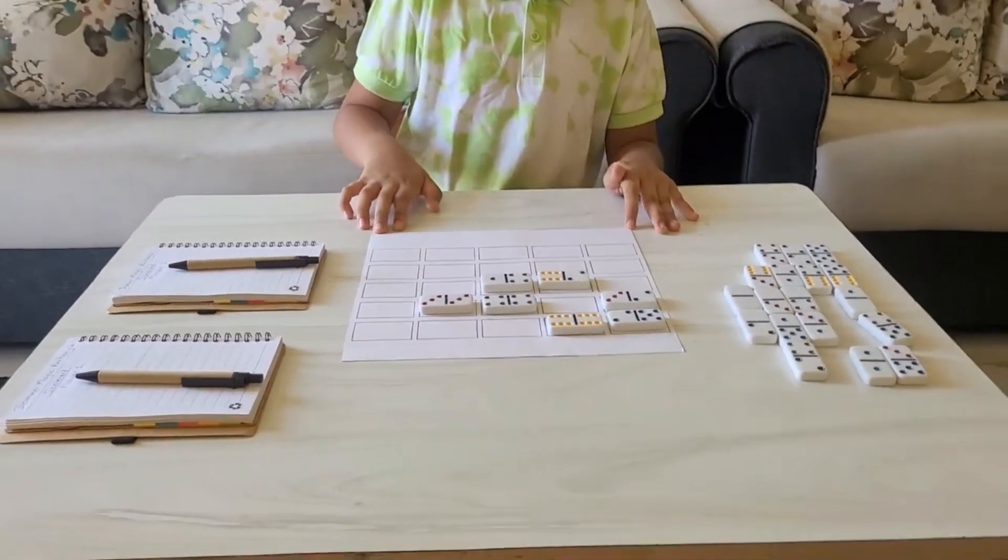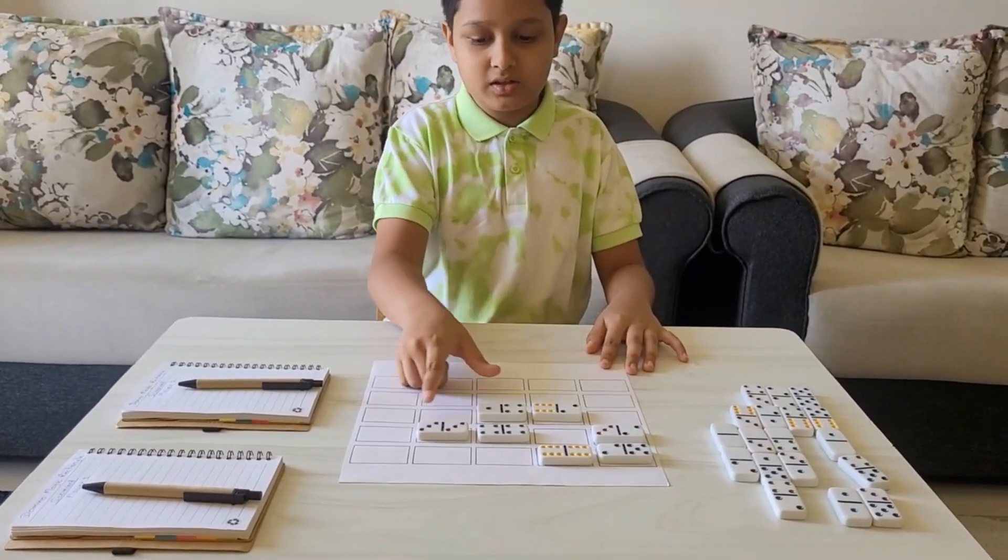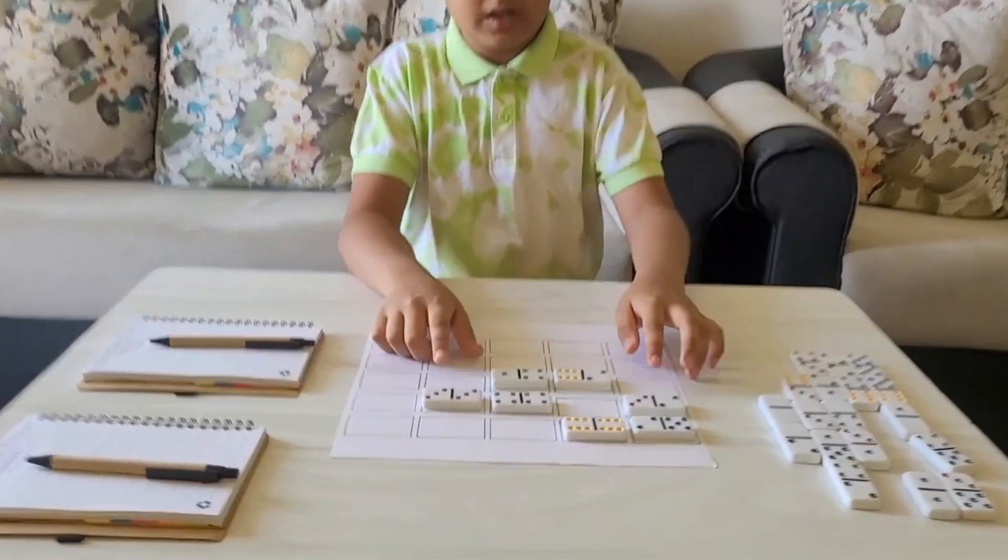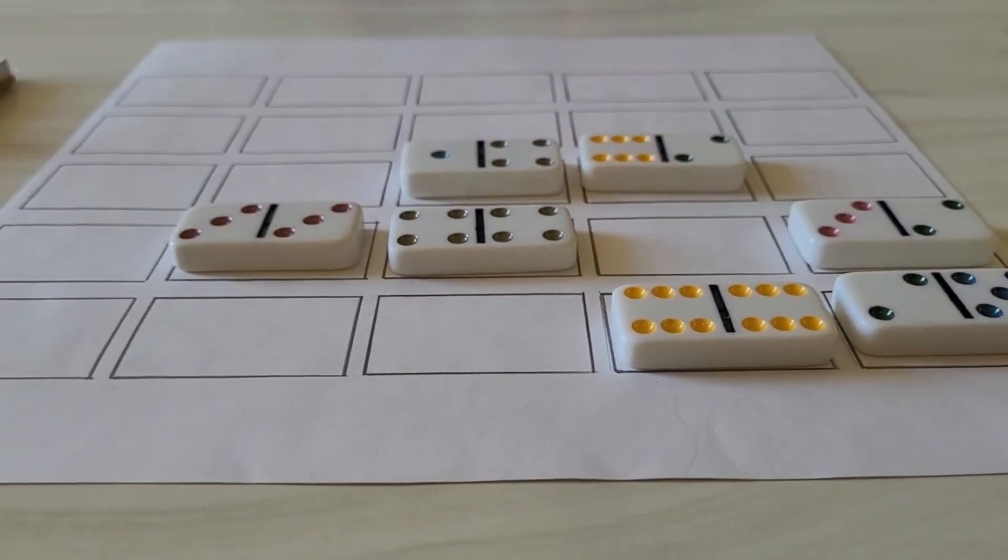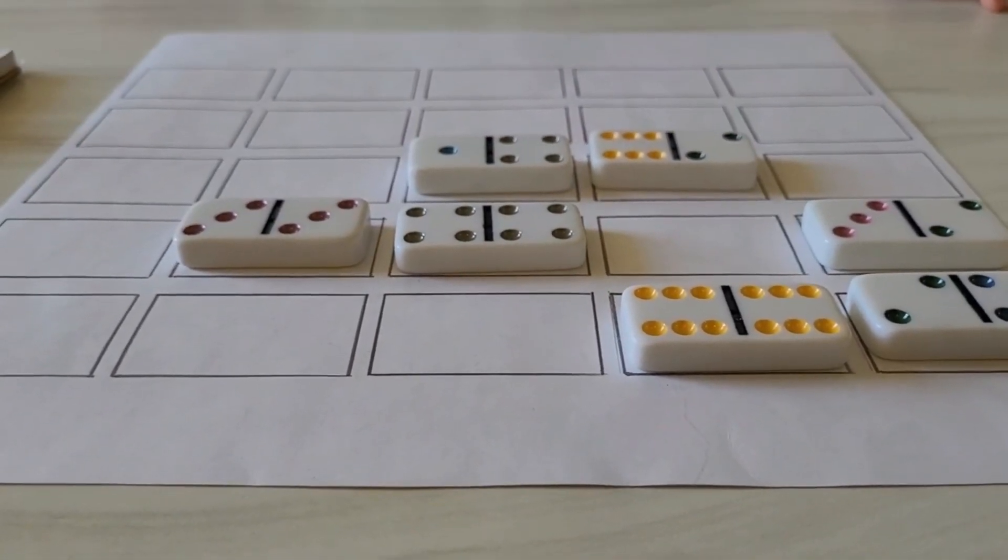Now I can look at this row. So the sum is 10 plus 8 is 18. In these two blocks, I need to get 12.